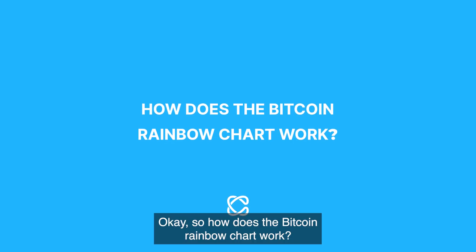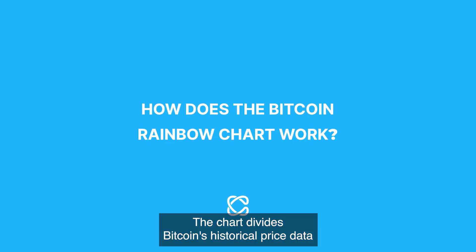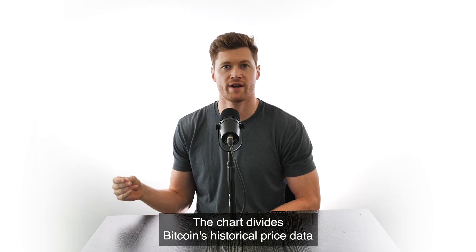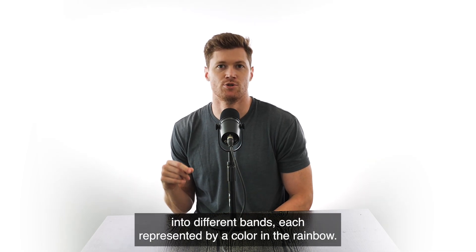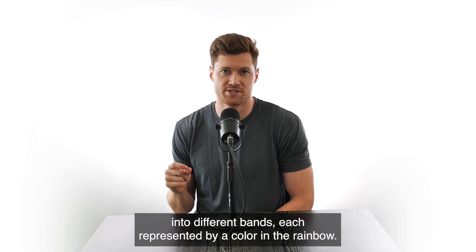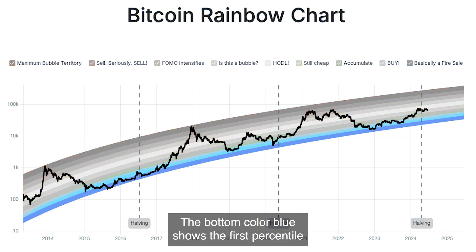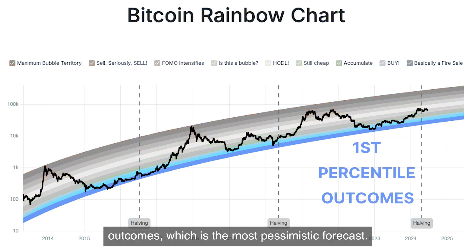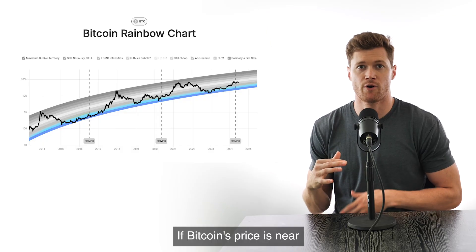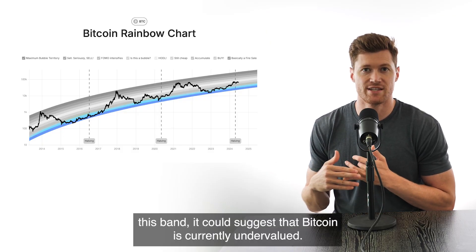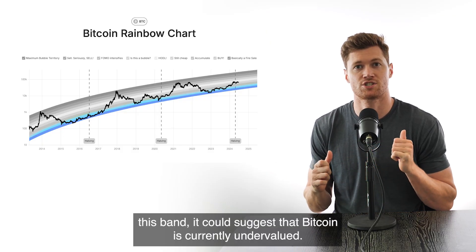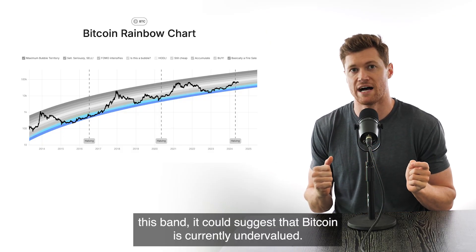So how does the Bitcoin rainbow chart work? The chart divides Bitcoin's historical price data into different bands, each represented by a color in the rainbow. The bottom color, blue, shows the first percentile outcomes, which is the most pessimistic forecast. If Bitcoin's price is near this band, it could suggest that Bitcoin is currently undervalued.